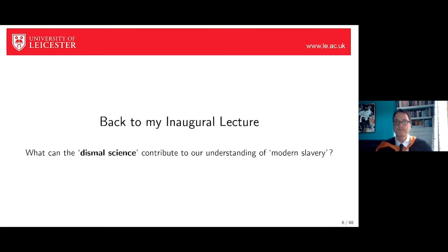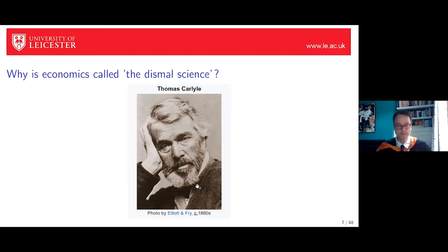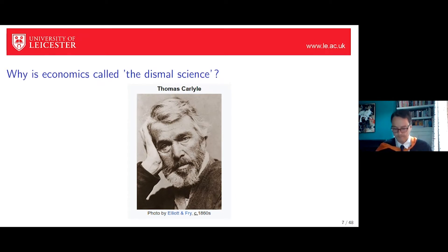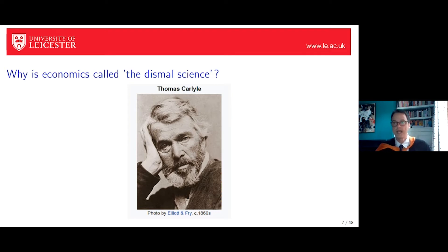The question today is what the 'dismal science' can contribute to our understanding of modern slavery. 'Dismal science' is a label often given to economics — usually derogatorily. It comes from the Victorian historian Thomas Carlyle, who wrote about the West Indies and wanted to reintroduce slavery. He looked to economics for justification, couldn't find it, and so described as 'dismal' the economists who opposed slavery. One might say that economics was on the side of morality and against racism — and I think it still is.